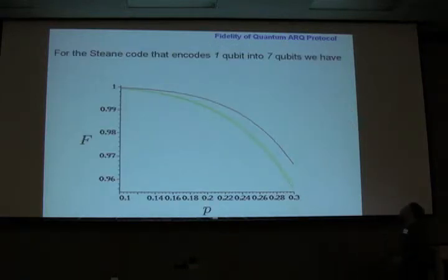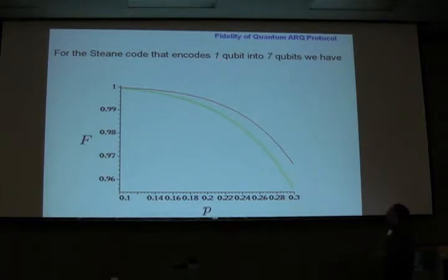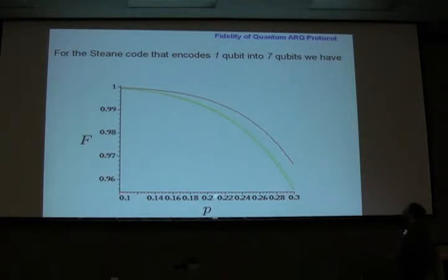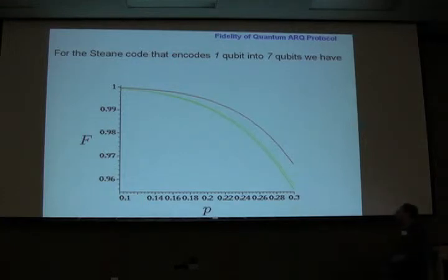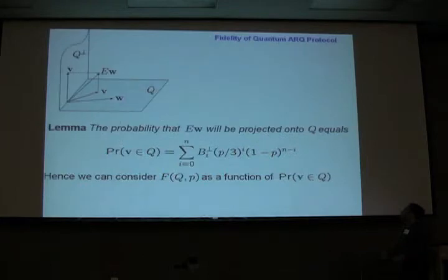It's interesting to consider examples. Taking the Steane code — the code that encodes one qubit into seven qubits — I construct an upper bound on fidelity, a lower bound, and the exact value of fidelity as a function of the error probability in the quantum depolarizing channel. Surprisingly, at least to me, the Steane code fidelity is very close to the lower bound. So from the fidelity point of view, it's not such a great code.